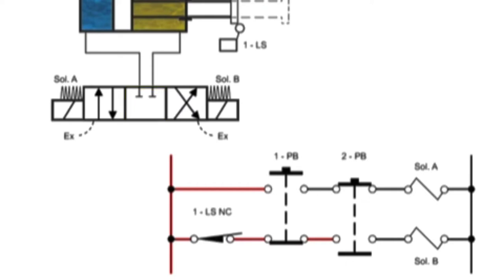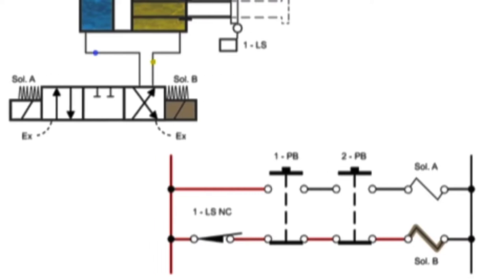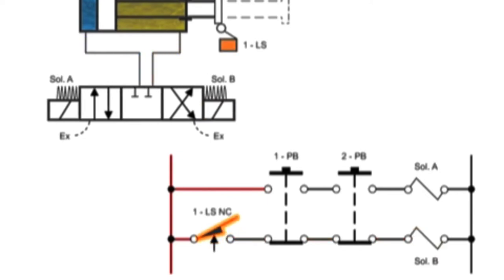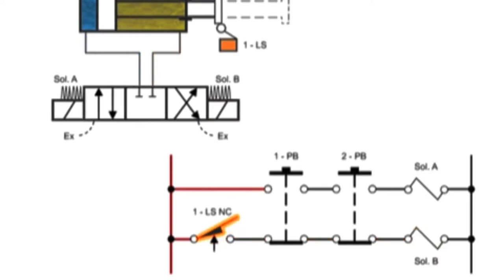If both buttons are released while the cylinder rod is extended, limit switch one allows solenoid B to become energized. The valve will shift to allow fluid into the rod end of the cylinder, causing it to retract. When it reaches the end of its stroke, it engages the limit switch, which opens the circuit and prevents electricity from flowing until the two start buttons are engaged once again.